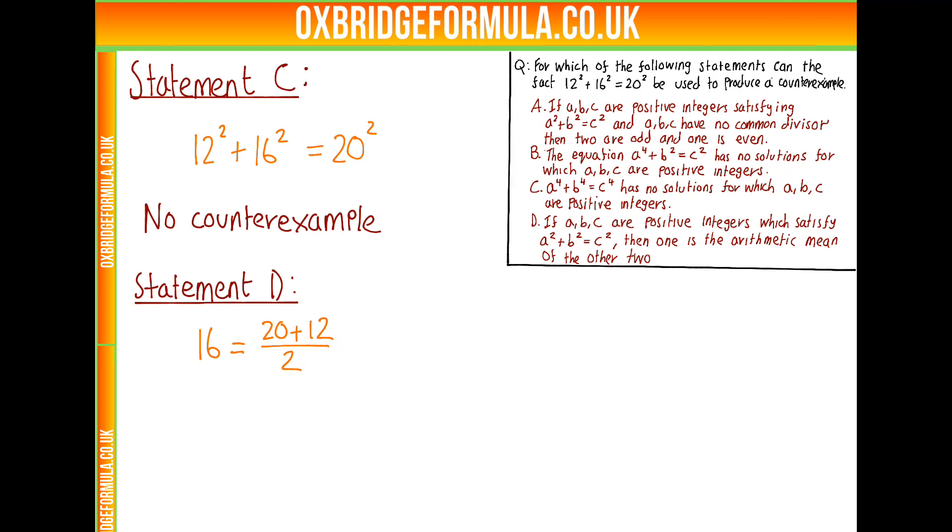Similarly, if we scale this to get other Pythagorean triples, the fact we divide or times each number by the same amount means that still one of the numbers will be the arithmetic mean of the other two. For instance, if we use 3 squared plus 4 squared equals 5 squared, you'll note that 4 is still equal to 5 plus 3 over 2.